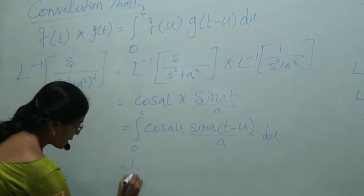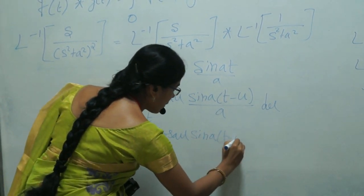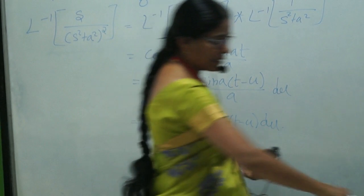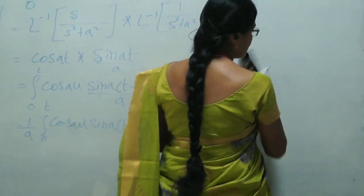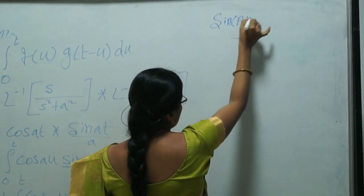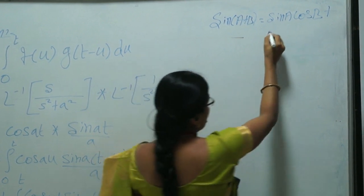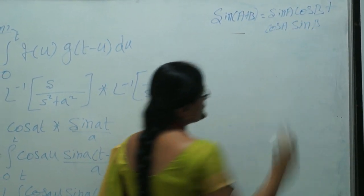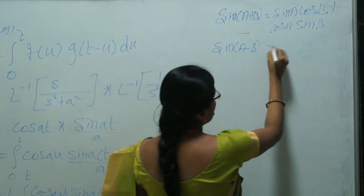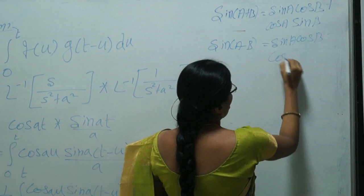Now apply the trigonometric formula. From lower classes we know: sin(A+B) = sin A cos B + cos A sin B, and sin(A−B) = sin A cos B − cos A sin B. Subtracting these: sin(A+B) minus sin(A−B) equals 2 cos A sin B.